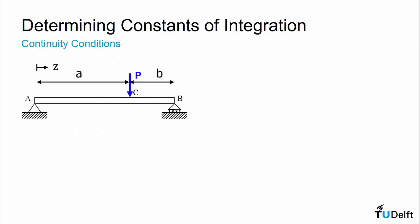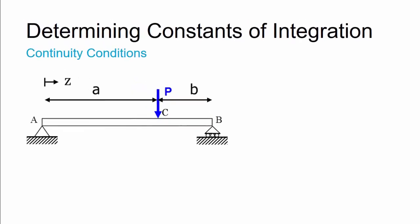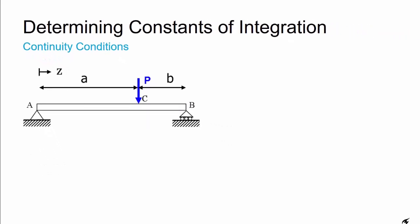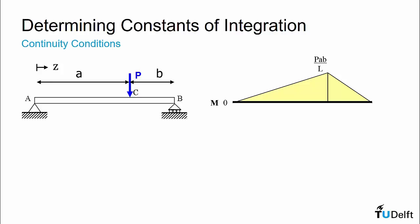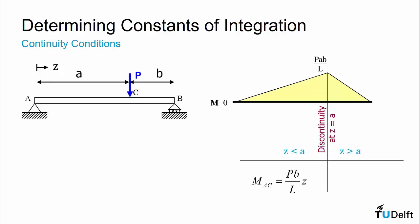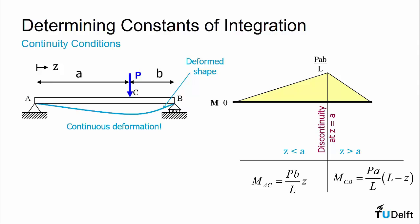The second type of boundary condition we need to consider is known as a continuity condition. Consider the beam problem shown below. If we draw the moment diagram for this problem, we can see that the moment distribution is a discontinuous function. We will have a moment equation for z less than a and a different moment equation for z greater than a. As a result, when we integrate these moment equations to get the deformation, we will have a separate set of deformation equations for each region. If we look at the expected deformation, though, it should be continuous. To ensure this continuous deformation, we need to enforce that the deflection and the slope at z equal a are the same for the two sets of deflection equations. Such a condition is called a continuity condition.